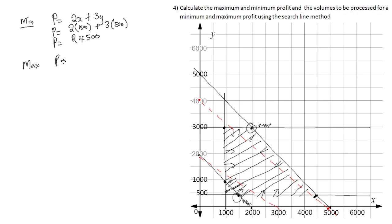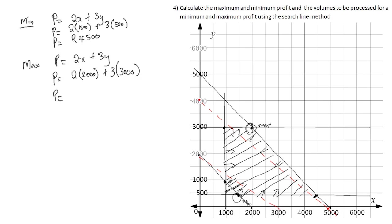Now for the maximum profit, using the same profit function 2x plus 3y: on the graph the maximum point has an x-value of 2000 and a y-value of 3000. So P equals 2 times 2000 plus 3 times 3000, which gives a maximum profit of 13 000 rand.